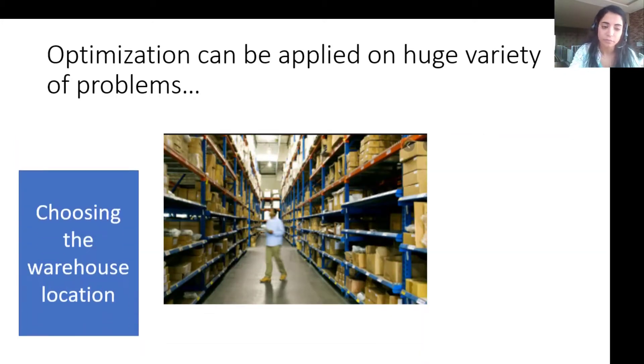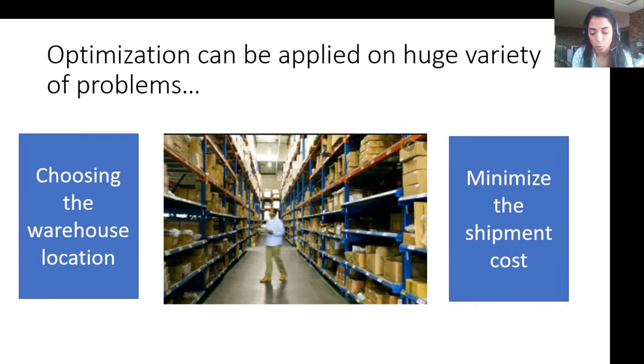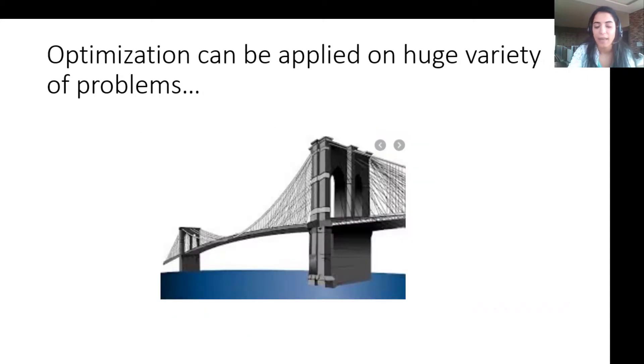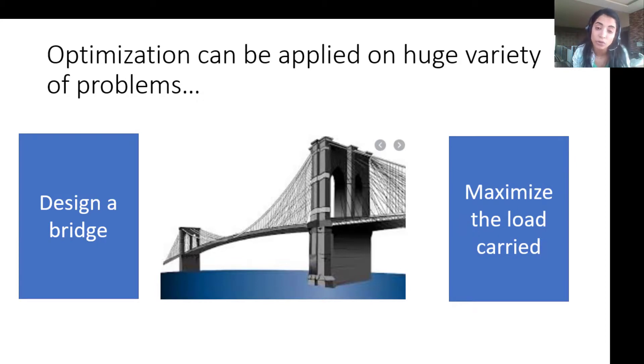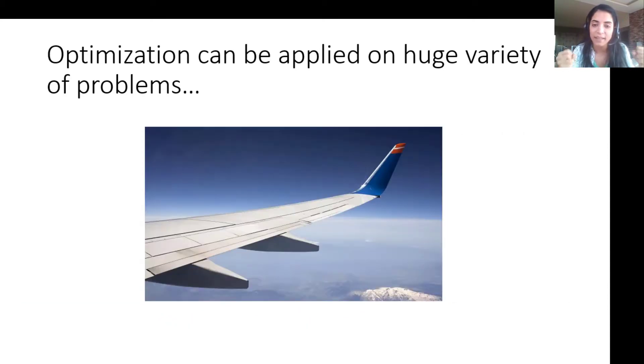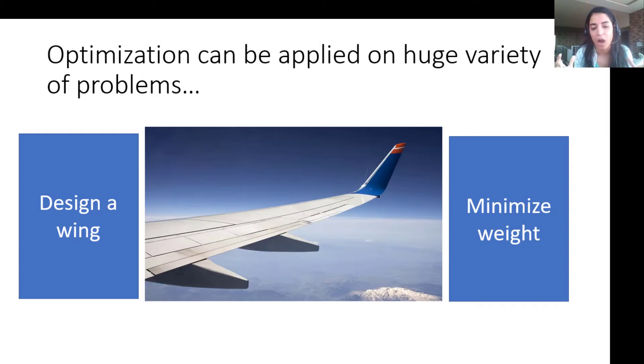What if I need to choose the warehouse location that minimize the shipment cost while maintaining some constraints like demands and capacity? And what if I need to design a bridge by selecting the best material that maximize the load carried, however by maintaining a certain budget in a certain time? What if I need to design an airplane wing by minimizing the weight of this wing while maintaining a good strength, a good modulus of elasticity and a certain limit of a cost? All of these examples are sophisticated examples that needs to be solved using a mathematical algorithm.